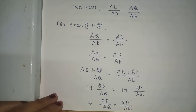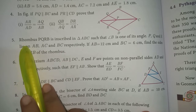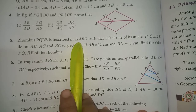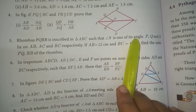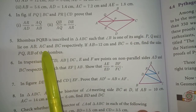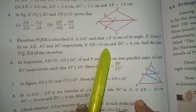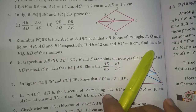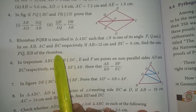Hence the second subdivision is also proved. Next, problem number 5 in exercise 4.2. A rhombus PQRB is inscribed in triangle ABC such that angle B is one of its angles. P, Q, R lie on AB, AC and BC respectively. If AB equals 12 cm and BC equals 6 cm, find the sides PQ and RB of the rhombus.